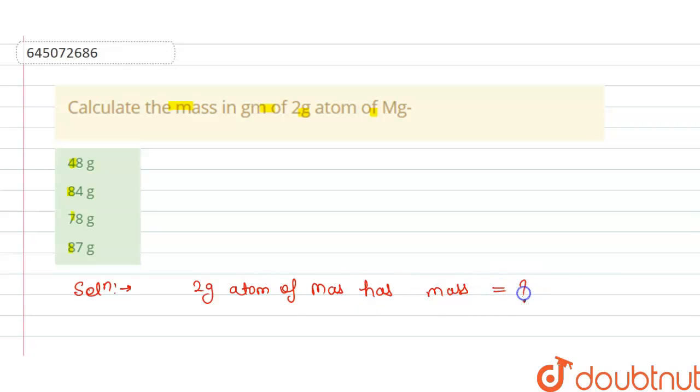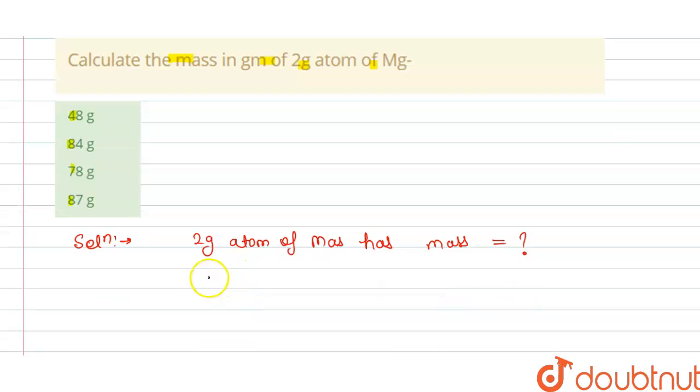So we have to calculate this. We know that 1 gram atom of Mg has mass equals to 24 gram. So we have to calculate 2 gram atom of magnesium.